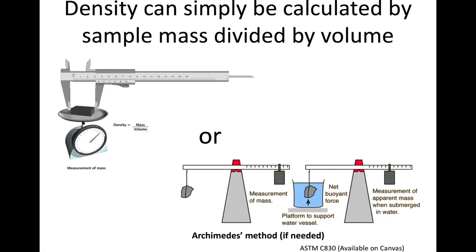Most notably, there is the Archimedes method. There is an ASTM standard for how to do this. More or less, you look at the buoyancy of the material and the volume is obtained from that. This is one way we could potentially measure the density of our samples if the simple calculation of mass and dimensions is not sufficient.